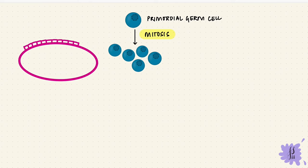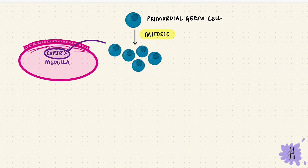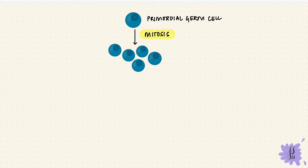The ovary has an outer germinal epithelium with cuboidal cells. Below that is dense connective tissue called the tunica albuginea. Then there's the ovarian cortex, which is continuous with the medulla. The migrating cells go into the cortex and differentiate to form oogonia, also called primordial ova. These are diploid cells.